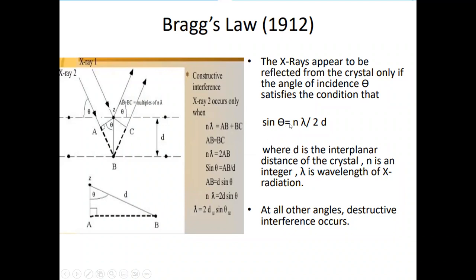Sin theta equals n lambda over 2d, where d is the distance. Now you see, here is a crystalline structure. This arrangement is for molecules within the crystal. And between the two layers, the distance is called the planar distance. Lambda is the wavelength of X radiation. And sin theta is the angle between the incidence and the reflected wave.